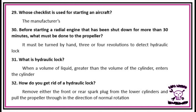Question 30: Before starting a radial engine that has been shut down for more than 30 minutes, what must be done to the propeller? It must be turned by hand 3 or 4 revolutions to detect hydraulic lock. Question 31: What is hydraulic lock? It is when a volume of liquid greater than the volume of the cylinder enters the cylinder.